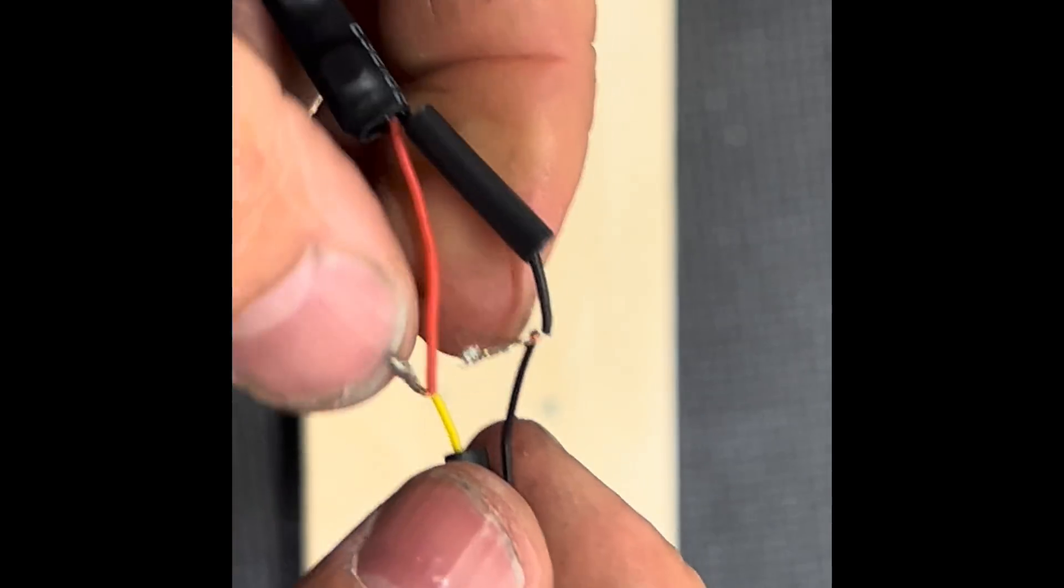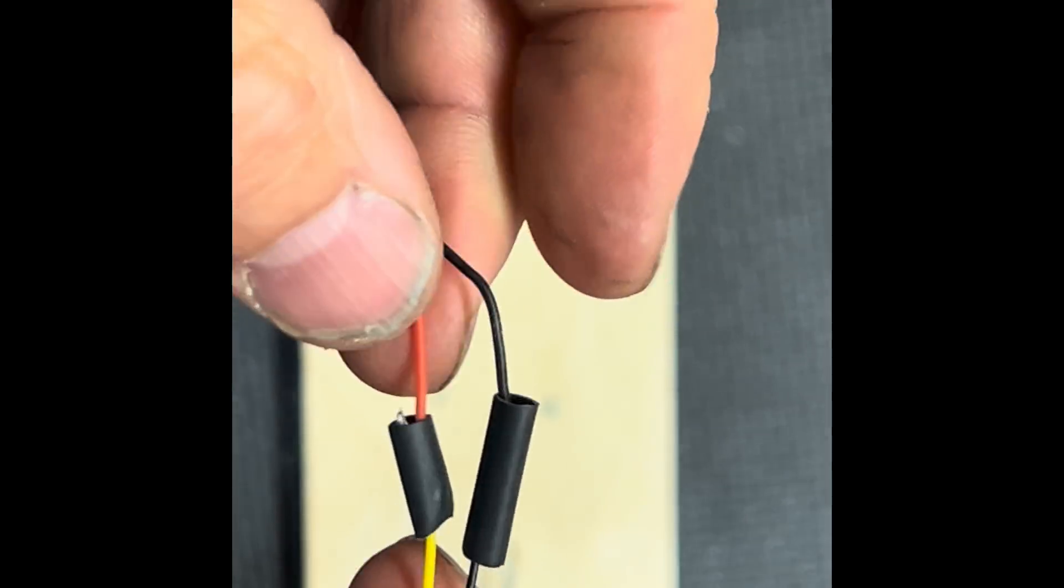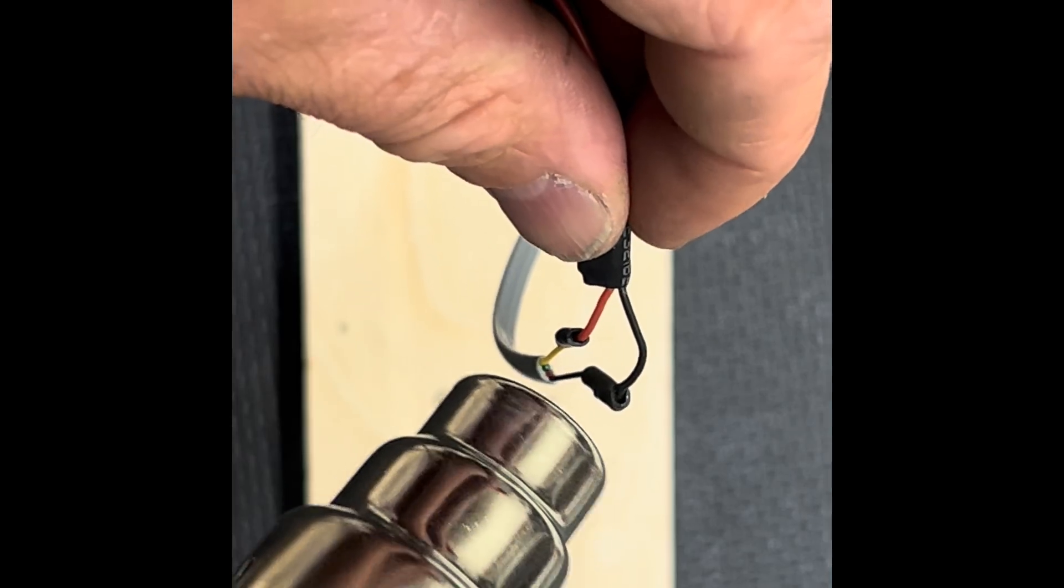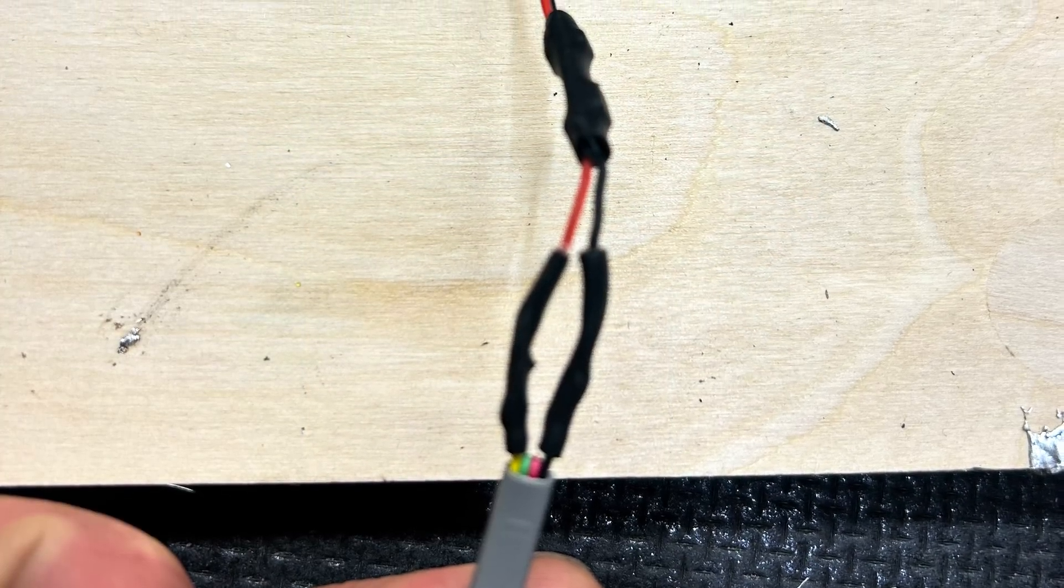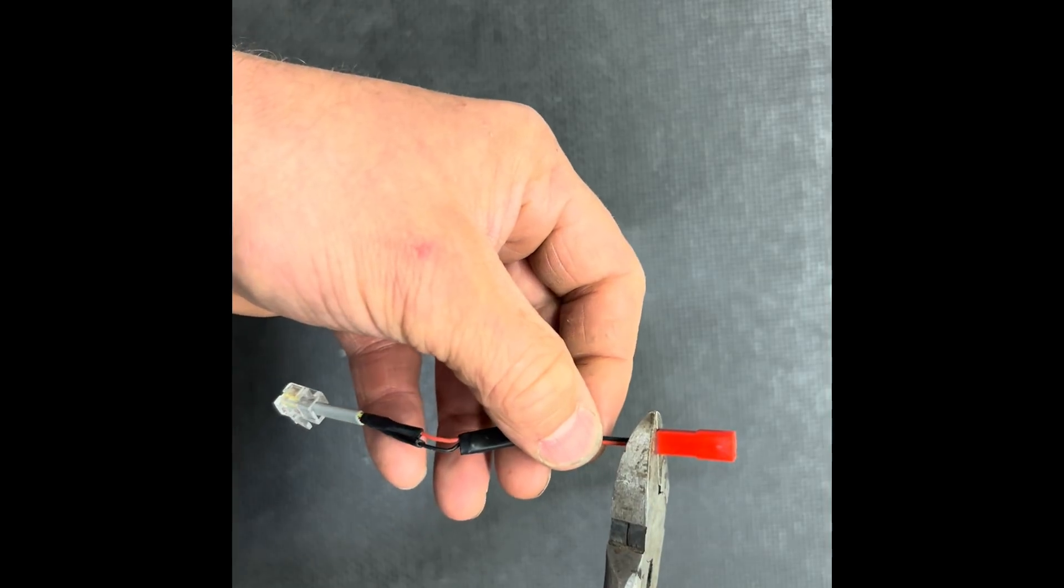Once both sets of wires are soldered together, bend the soldered end over and slide the heat shrink over the exposed wire. Careful not to damage the wire. Use a heat gun to shrink the heat shrinking over the exposed wires. Now cut the opposite end off of the 12 to 5 volts adapter.